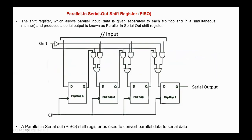The third type of shift register is parallel-in serial-out. In this configuration, we have one serial output and several parallel inputs. A parallel-in serial-out shift register is used to convert parallel data to serial data. If the shift control is 1, then the output of the first AND gate is 0 and the output of the second AND gate is Q1, so Q1 is transferred to the next stage and Q2 similarly. However, if shift is 0, the parallel inputs are applied to the flip-flop inputs.